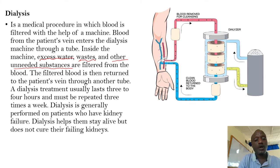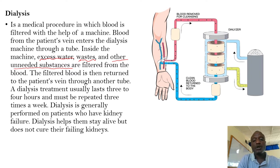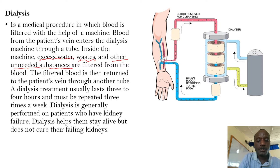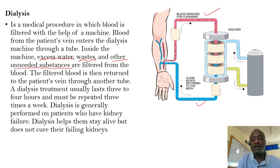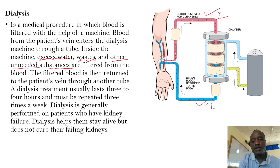After filtration, the filtered blood is returned back to the patient's vein through another tube. So when you observe the machine, you will find that it has two tubes. The first tube carries blood removed from the patient for cleaning, passing through the dialyser, and the second tube returns the cleaned blood back to the body.